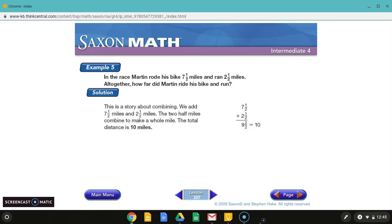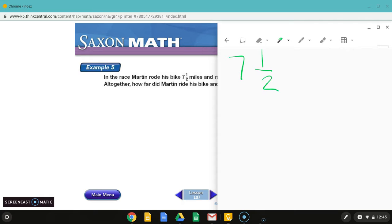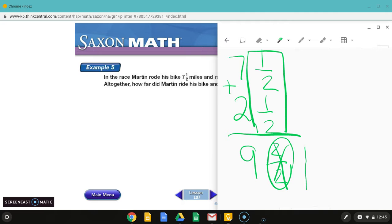All right. In the race, Martin rode his bike. Let me show you. He rode his bike seven and a half miles and ran two and a half miles. Altogether, that's an addition word. How far did Martin ride his bike and run? Altogether tells us that we are going to be adding. So we have seven and a half miles he rode his bike and two and a half miles he ran. So I'm going to go ahead and just rewrite it vertically. So one-half plus one-half. One plus one is two over two. Now that fraction looks weird. We'll change that in just a second. Seven plus two is nine. Okay, so nine and two halves. That looks silly. When you have the same numerator and denominator, you can change that into a one. So that's like saying nine plus one, which would equal ten. So altogether, his total distance was ten miles.